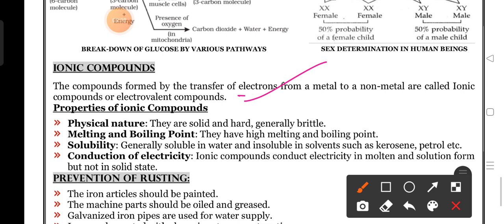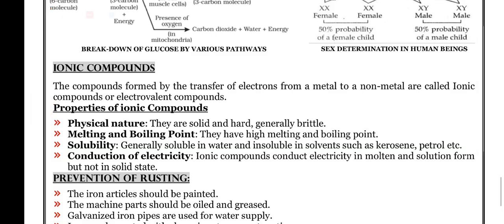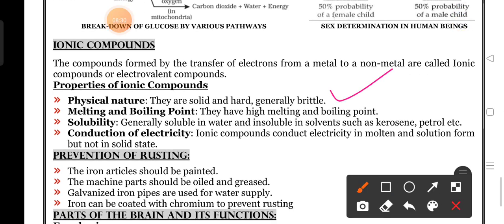Properties of ionic compounds: First, physical nature - they are solid, hard, and generally brittle. Why? Because they have attraction between positive and negative ions. Second, melting point and boiling point are high. They have high melting and boiling points because the attraction between cation and anion is more. To break down that ionic bond, we require more energy in the form of heat.